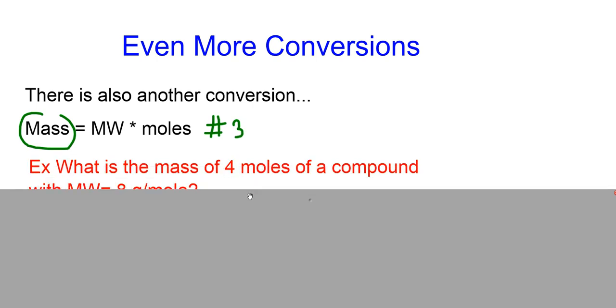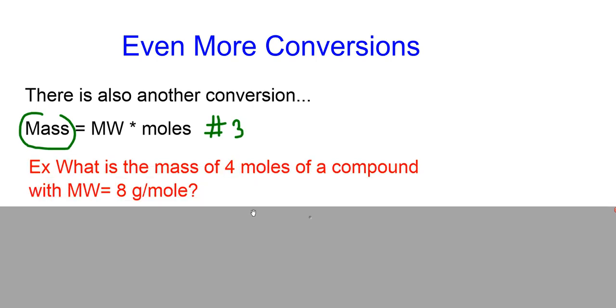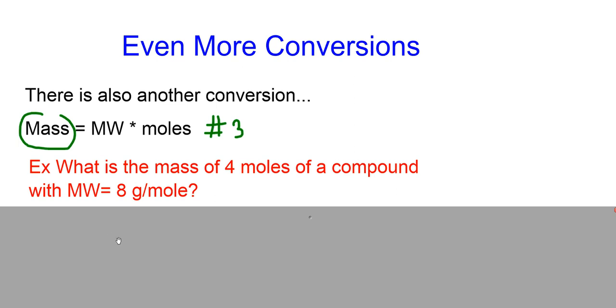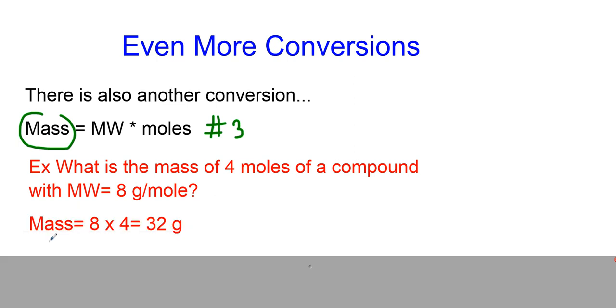Let's try a problem with that. Suppose I have a problem that says what is the mass of something if I have 4 moles of an unknown compound and the molar mass is 8 grams per mole? Let's use this equation now. So the mass I'm trying to calculate would be the molar mass, which is 8, and how many moles? I have 4. So 8 times 4 means I must have had 32 grams of that sample.